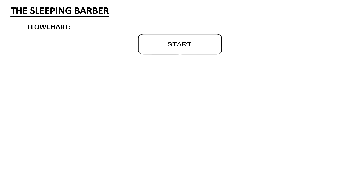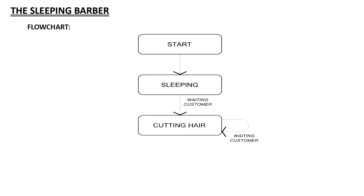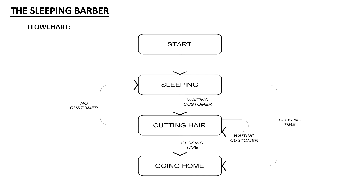Here is a simple flowchart for the sleeping barber problem. At the start of the barber's shift, the barber is still sleeping since there are no customers yet. If a customer walks in, the barber will do his job and start cutting hair. If there are still other customers waiting at the lobby, the barber will continue to cut hair, but if there are none, he'll go back to sleep. Once it is closing time, he'll finish cutting the hair of his last customer before going home. If there are no customers remaining, the barber will simply close shop and go home.